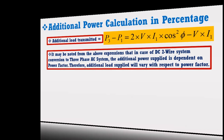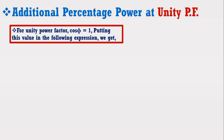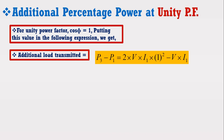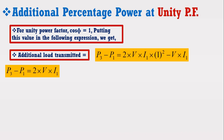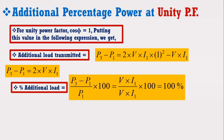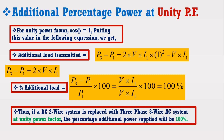First, I am going to calculate additional percentage power at unity power factor. For unity power factor, cosφ = 1. Putting this value in the expression, we get additional load transmitted = 2 × V × I1. The percentage additional load equals (P3 − P1) / P1 × 100. It can be noticed from the above expression that if a DC 2-wire system is replaced with a 3-phase 3-wire AC system at unity power factor, the percentage additional power supplied will be 100%.